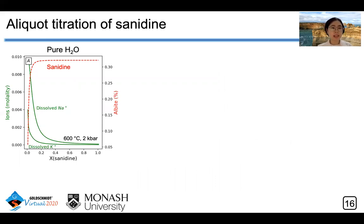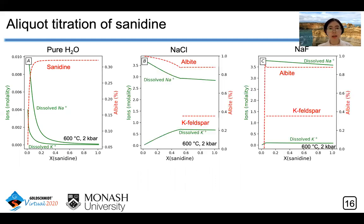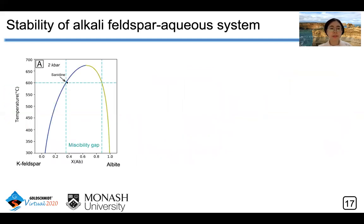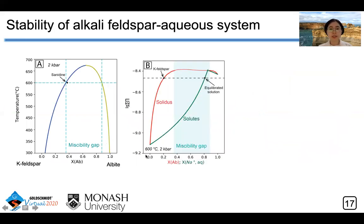In pure water, sanidine starts to dissolve first, but then the solution is buffered by sanidine. However, in both sodium-chloride and sodium-fluoride solutions, sanidine starts to dissolve first, but then the solution equilibrates with albite and K-feldspar, which means that at equilibrium, sanidine should be replaced by albite and K-feldspar at the same time. But how can that be possible? Because at experimental conditions, there is a miscibility gap between K-feldspar and albite, with the model relationship between solutes and its equilibrated solids.